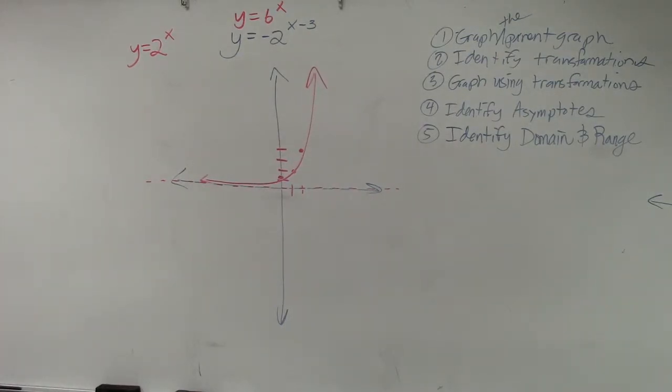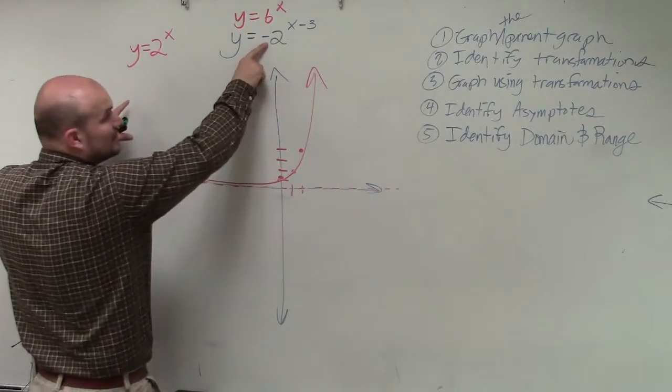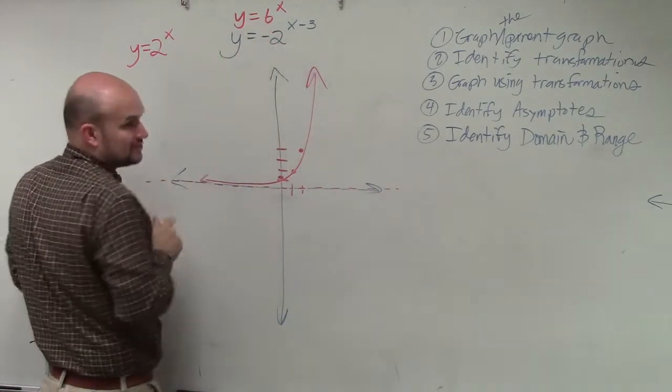I think it's very important when you're graphing that the first thing you do is graph the parent graph, see what it looks like. Now the next thing is identify the transformation. We look up here and see I have a negative and a minus 3.